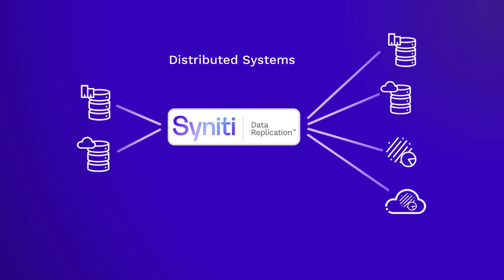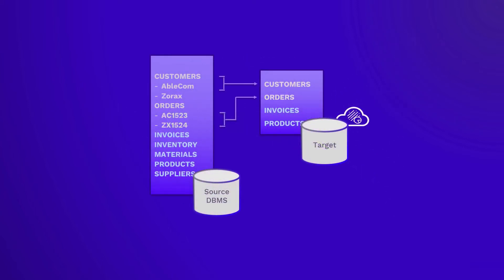When you have multiple systems, either geographically or virtually distributed on-premise or in the cloud, you can depend on Synity Data Replication to handle data updates among those systems automatically and regardless of location. And that data is constantly refreshed, without manual intervention.